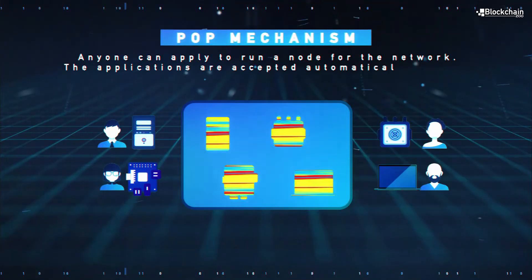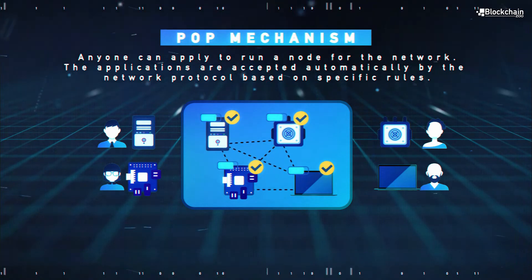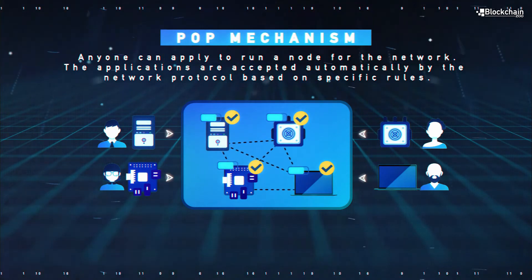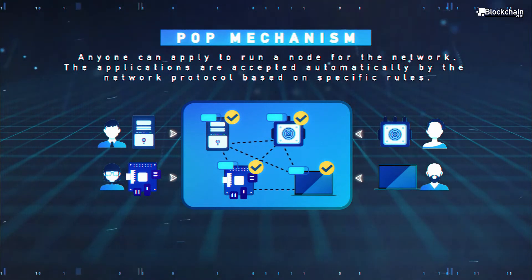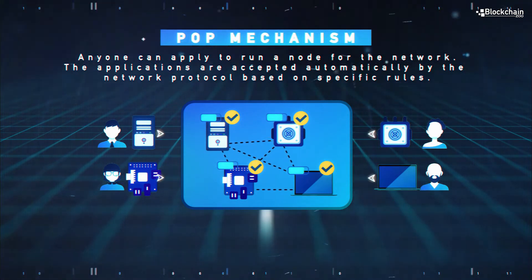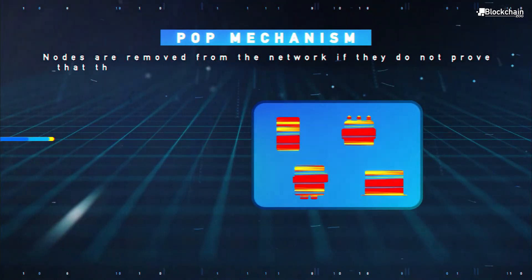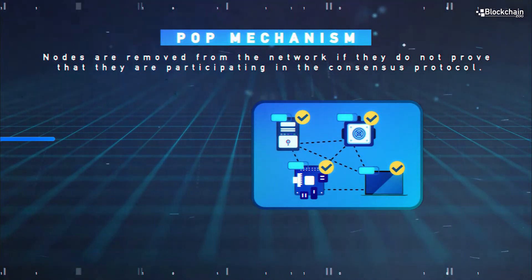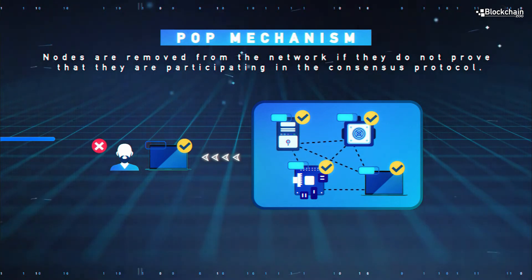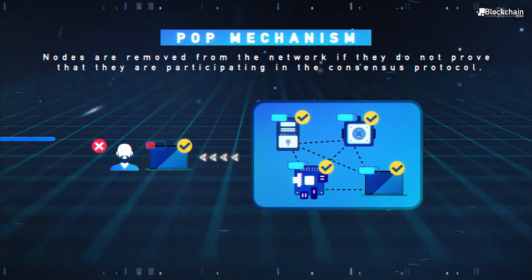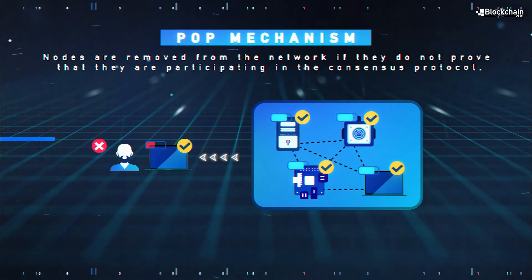We've developed a new consensus algorithm that we call proof of participation. In this algorithm we maintain a federation of nodes which gains a lot of the benefits of the federated consensus strategy, but rather than us selecting which participants are allowed into the network, we use a permissionless set of rules to admit new nodes into the network and we take measurements of whether the nodes are participating with each other in the network well enough in order to decide who to kick out of the federation automatically.